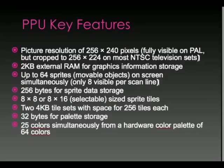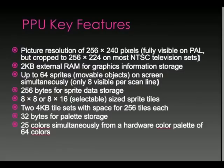Picture resolution on the NES is 256 by 240 pixels — much smaller than monitors and high-definition TVs of today. There's only 2 kilobytes of external RAM for graphics information storage. Only 64 sprites — movable objects — can be on screen simultaneously, and only 8 are visible per scan line. So of all the moving objects on screen, whether bullets, spaceships, Mario, or fireballs from Super Mario Brothers, only 64 can appear at one time, and only 8 of them can appear side by side horizontally. There are 256 bytes for sprite data storage.